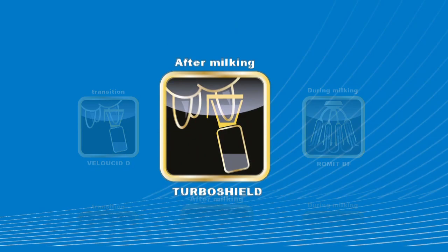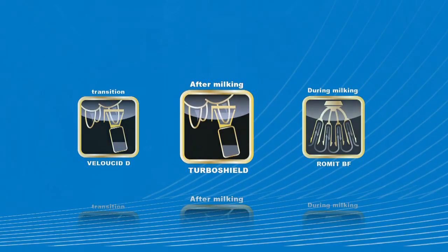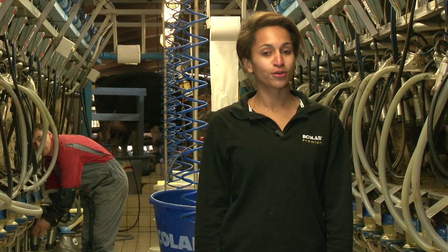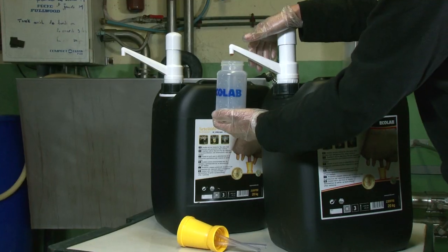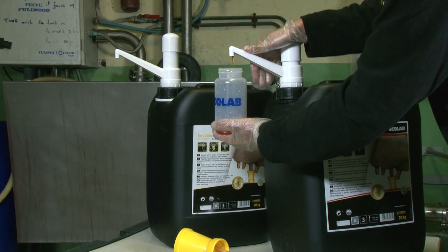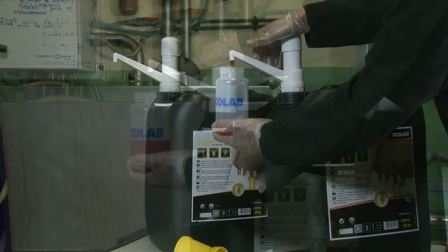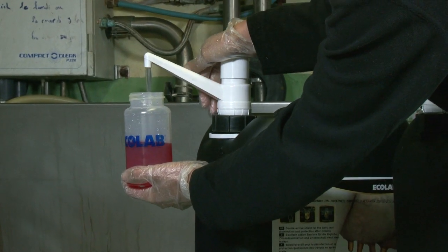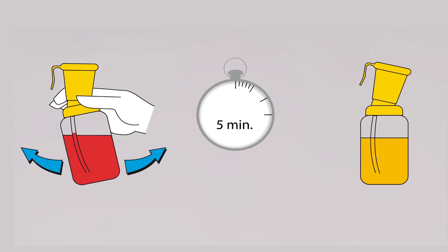I'm going to talk to you about our new innovation in udder hygiene, TurboShield. It is a product from our premium product range, providing a double action for the cow's teats. It is a product designed to disinfect and protect the teats after milking.